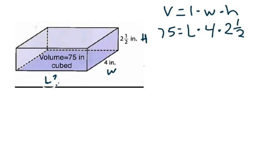So, what I'm going to do now is simplify on the right side of this equation. So, I'm going to keep my 75 on the left. And I'm going to take 4 times 2 1⁄2. So, I'm going to come over here and I'm going to say 4 over 1 times.